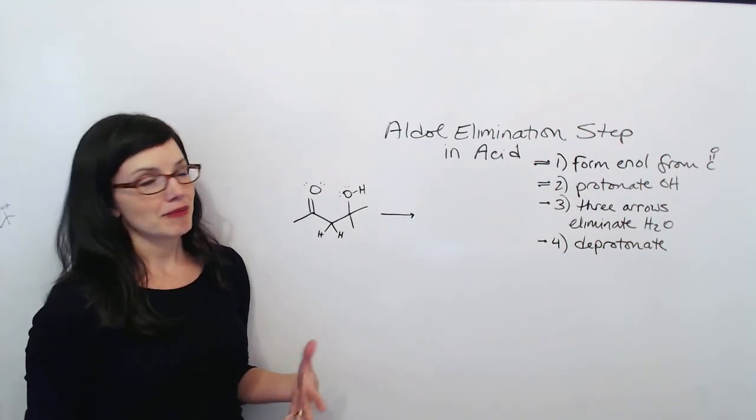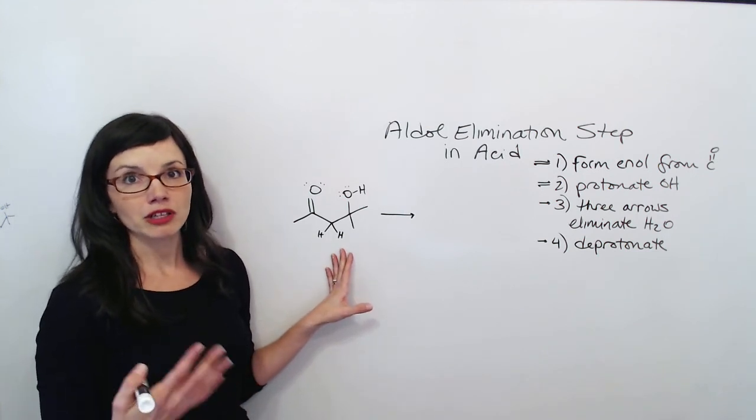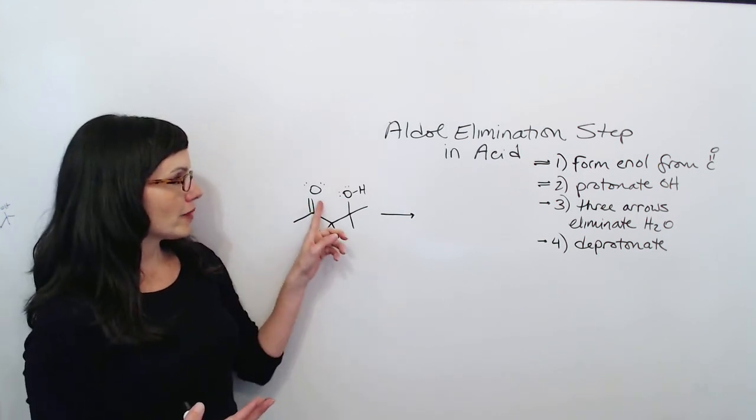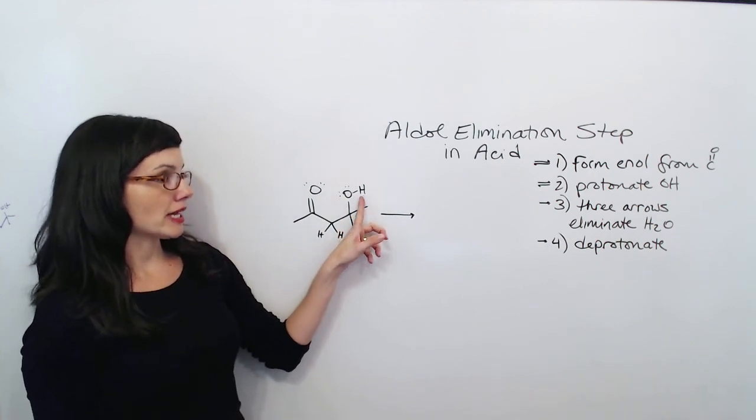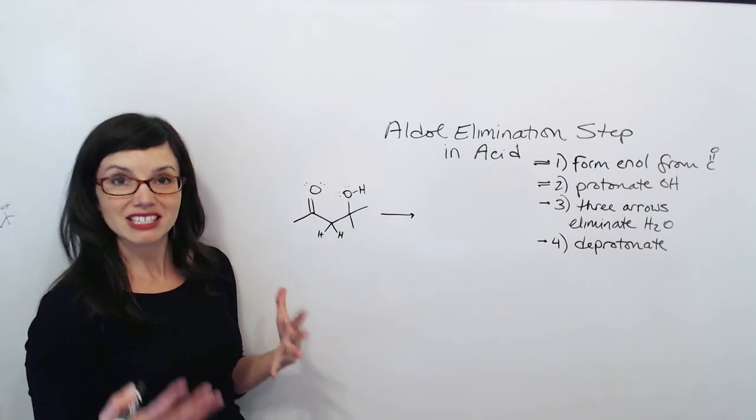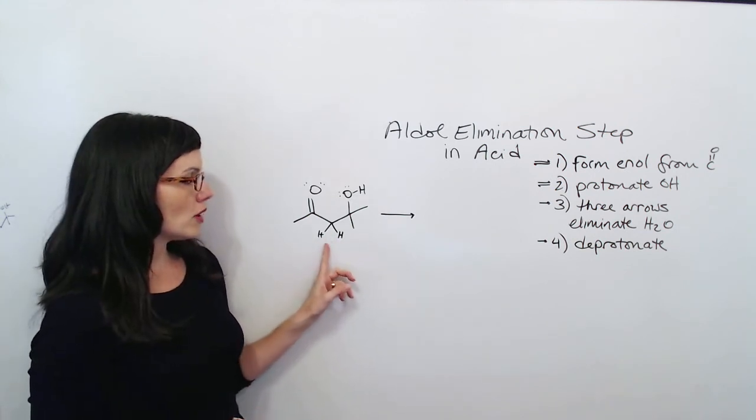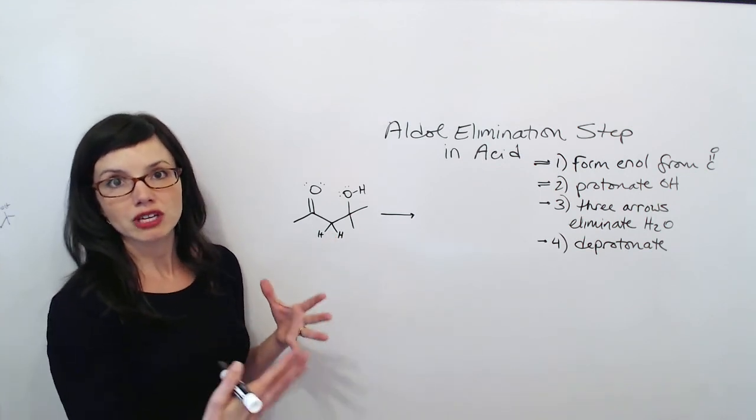Whenever I'm asked to do this kind of mechanism, I always want to first make sure that all the features of my molecule are clear. I want both of my O's to have their electron pairs. I want the H on my hydroxy group to be sort of separated from my O, so that it'll be easily visible. And I also want my alpha hydrogens to be individually drawn so that I can find them.